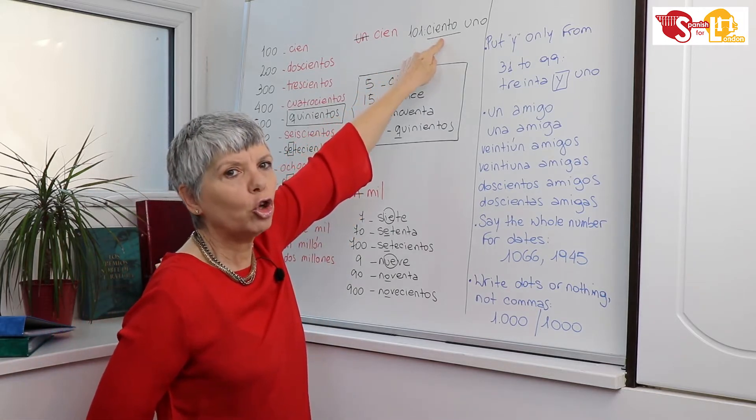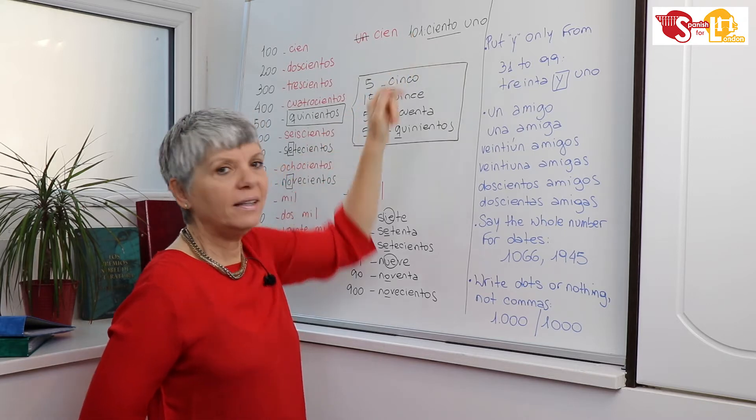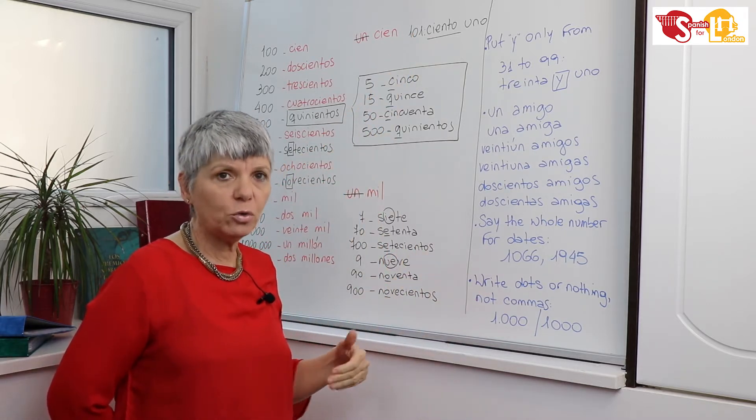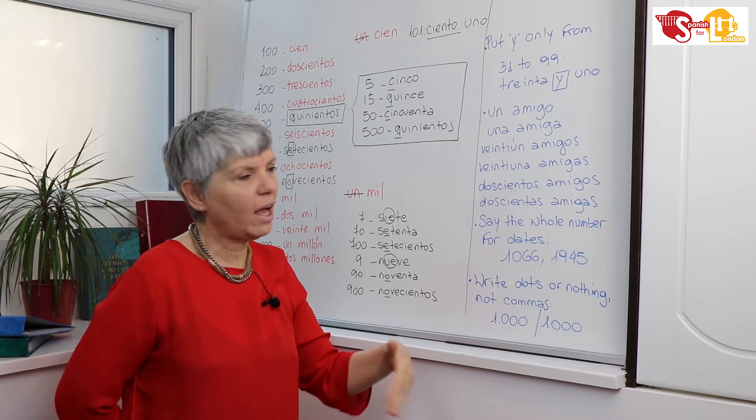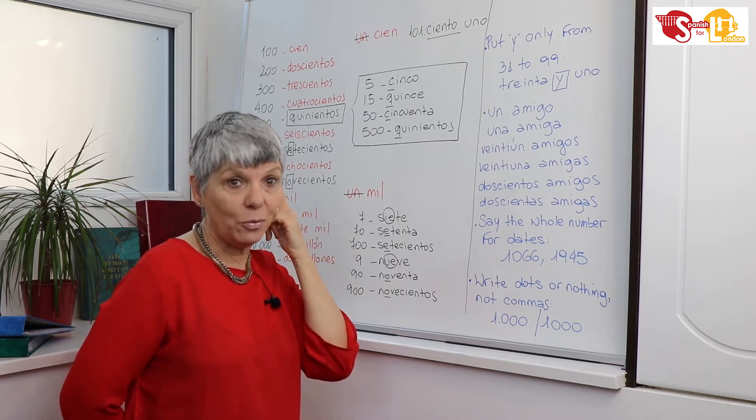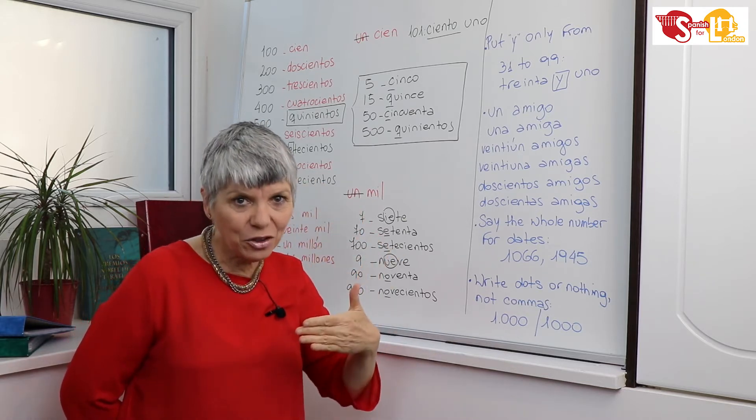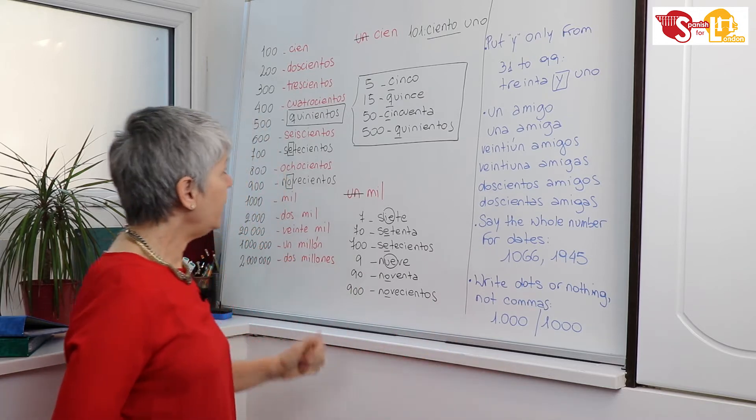But when we want to say 101, 102, and so on, we don't say cien but ciento. So 101 is ciento uno. 102, ciento dos, and so on until 199, ciento noventa y nueve.